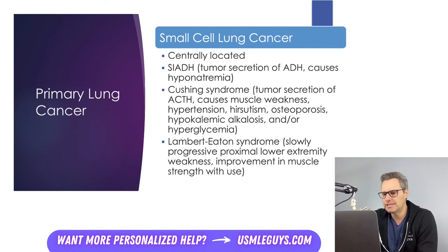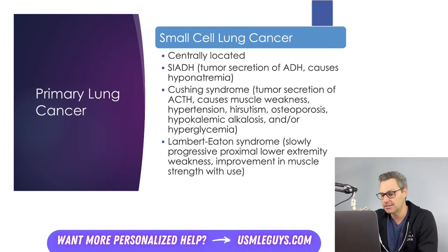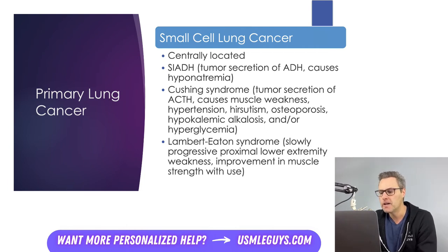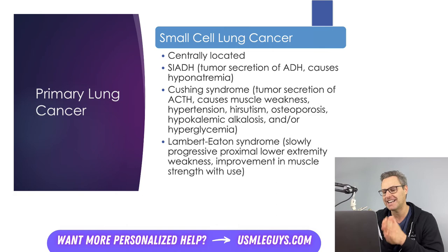Small cell lung cancers are located more centrally. They are associated with SIADH since the lesion can secrete ADH — too much ADH means too much fluid retained, which can lead to hyponatremia. A lesion can also secrete ACTH, which can result in Cushing syndrome. Finally, don't forget that Lambert-Eaton Myasthenic syndrome is associated with a small number of patients who have small cell lung cancer — this results in antibodies directed against the presynaptic calcium channels.